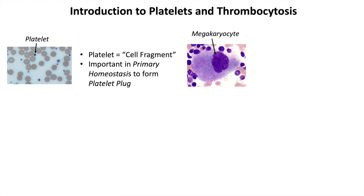Platelets are actually cell fragments of a larger cell called the megakaryocyte, which is located in the bone marrow. Megakaryocytes have little receptors that respond to thrombopoietin or TPO. Thrombopoietin binds to these receptors on megakaryocytes, inducing the megakaryocyte to produce platelets.